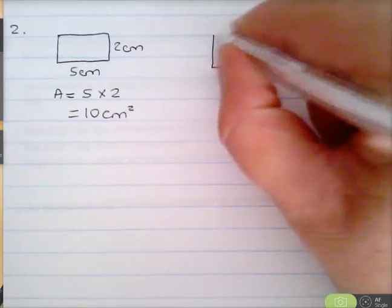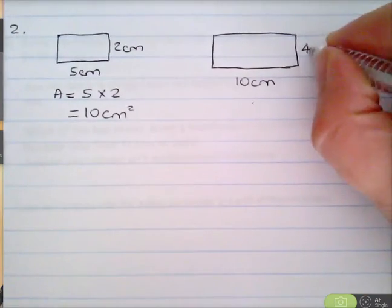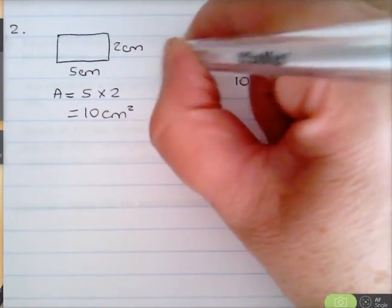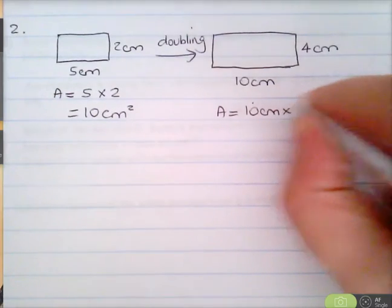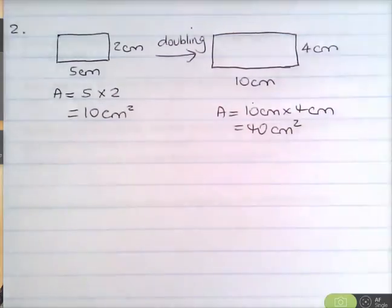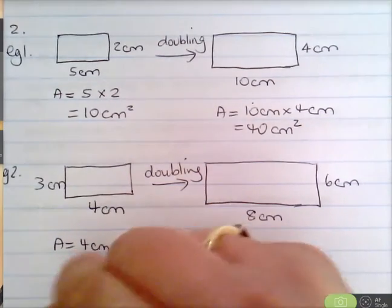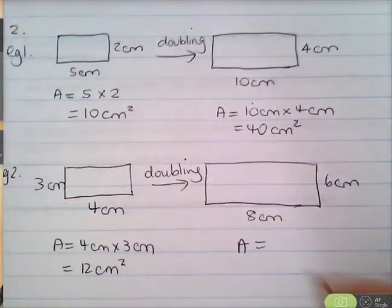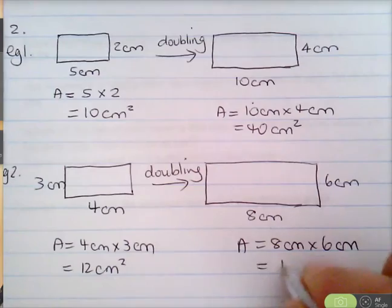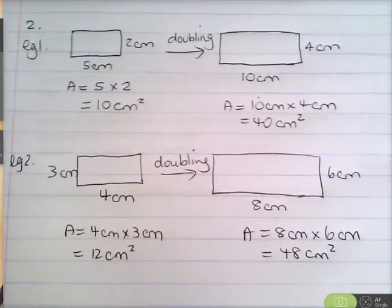Now doubling the length and width: the length goes from 5 to 10 centimeters and the width goes from 2 to 4 centimeters. The new area is 10 times 4, which is 40 centimeters squared. For example 2: a 4 centimeter by 3 centimeter rectangle has area 4 times 3, which is 12 centimeters squared.